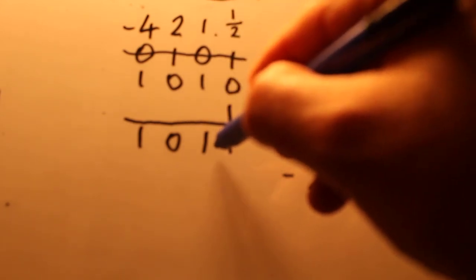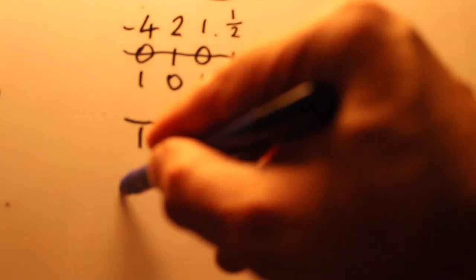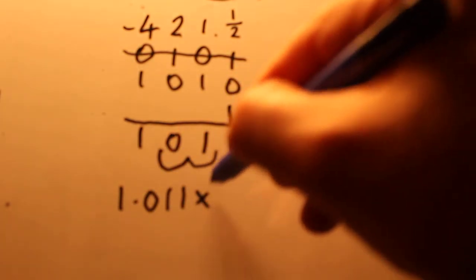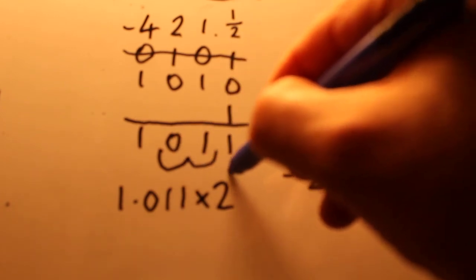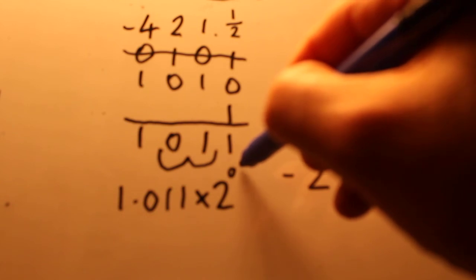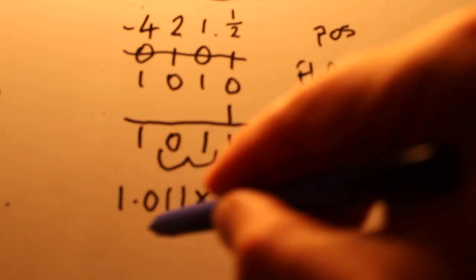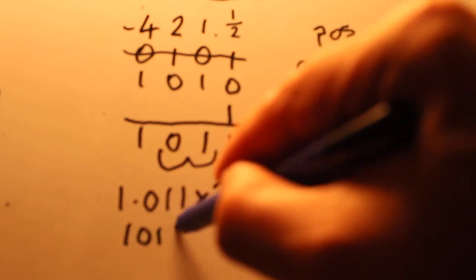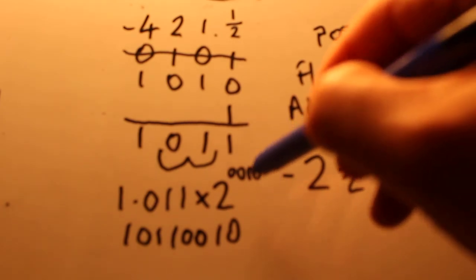Which would give us standard form of times two to the power and we've moved one zero one one zero zero one zero. So the exponent would be a two and there's the mantissa.